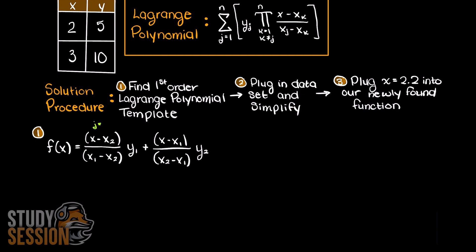If you are at all confused on how I am developing this first order equation, check out our introduction to Lagrange polynomial video in the description down below. Now that we have written that all out, we have completed our first step in the solution. We must now plug in our data points and simplify, such that the Lagrange polynomial is fit to our specific problem.